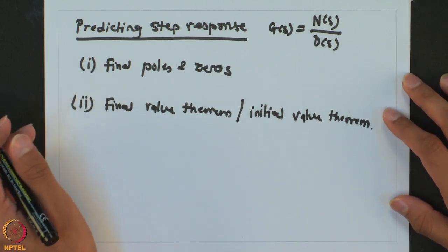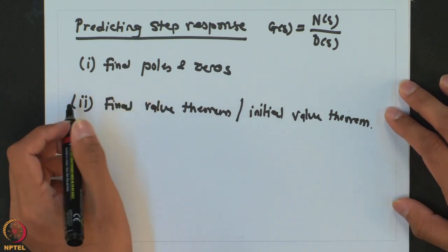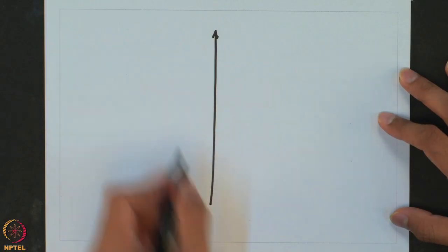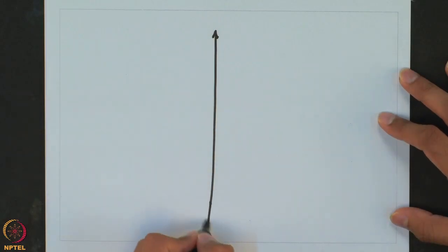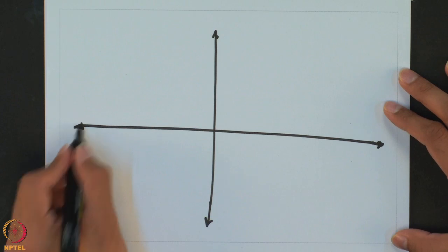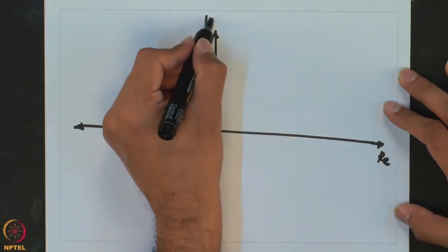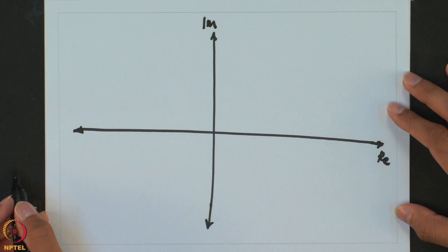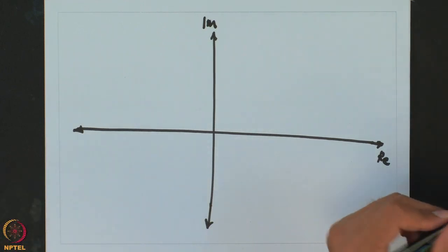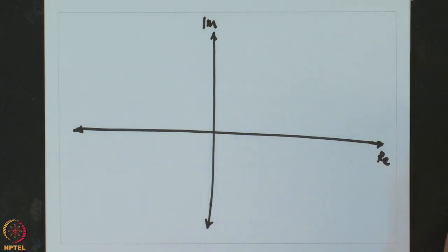For that, what we do is plot these poles and zeros into the complex plane. This is the real axis and this is the imaginary axis. In this figure, for any transfer function, we will plot or place the poles as well as the zeros.